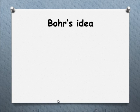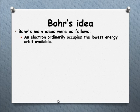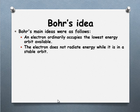Following on from that, an electron will occupy the lowest energy orbit available — essentially it's lazy and won't do extra work. In its lowest orbit it is stable and won't give off any energy. If it's in a higher orbit, it has excess energy and will drop back down to a stable, lower orbit, and that's when energy is given off.